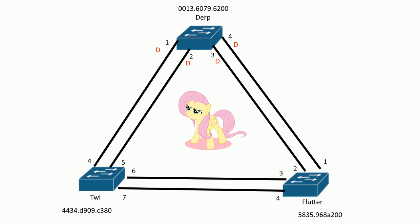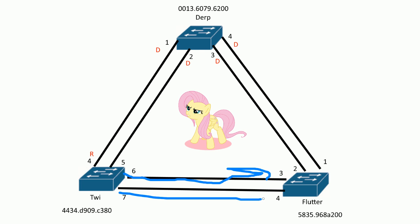So this port here becomes the root port for this switch. That was a lot, but just bear with me — this might be long. So now we've found the root port for twine. Once this switch finds its root port, it goes out on the other ports — ports six and seven — saying to flutter: the cost is 19 to the root bridge through me, through twine. Because this port added a cost of 19.